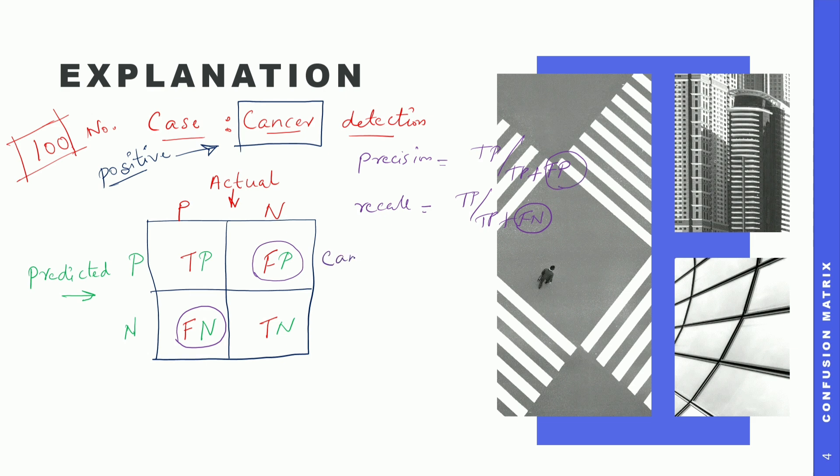So what is false positive here? We predicted to have cancer but it's wrong. We predicted to have cancer but it's wrong. Similarly here, we predicted to not have cancer but it actually has cancer. So these are the two cases - false negative and false positive. Now read this, take some time and try and think which one becomes important.